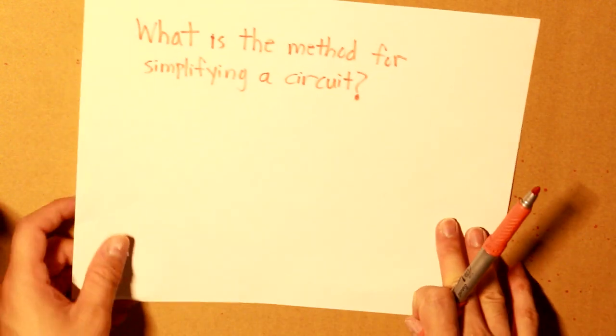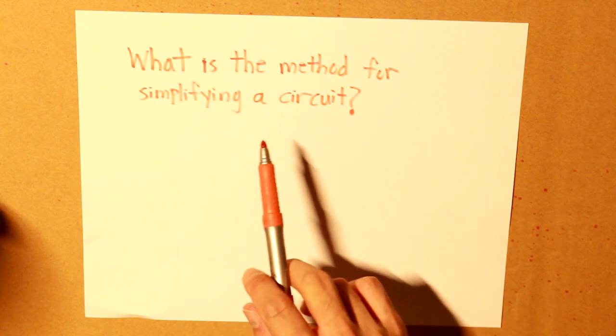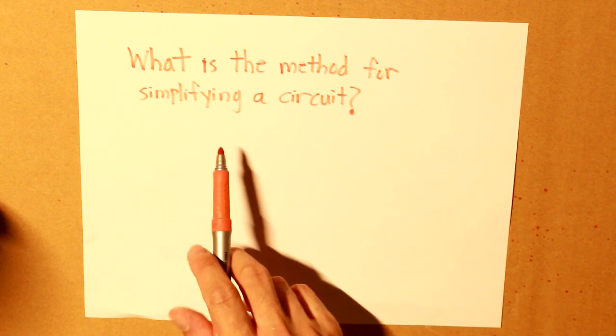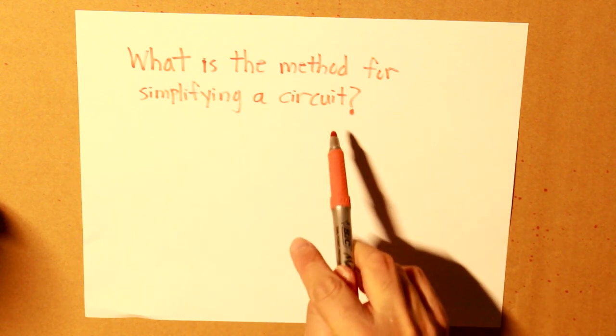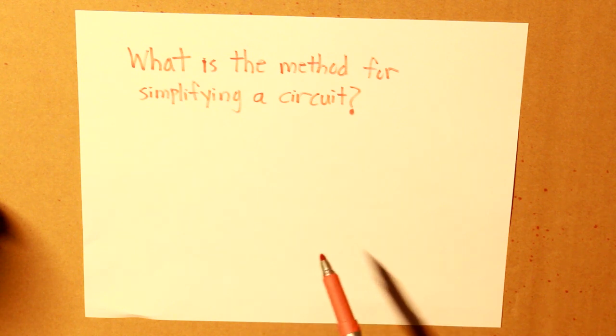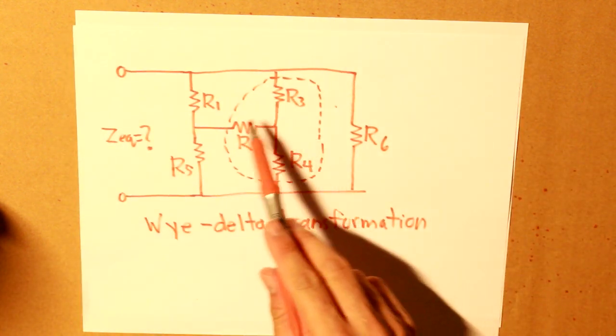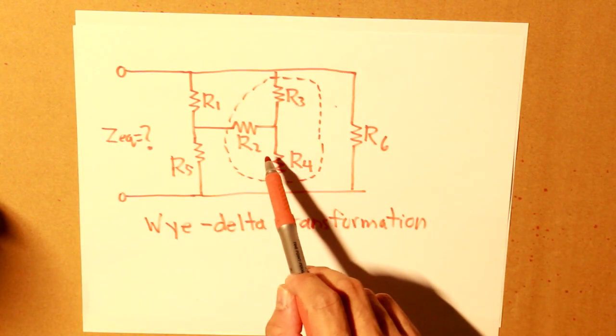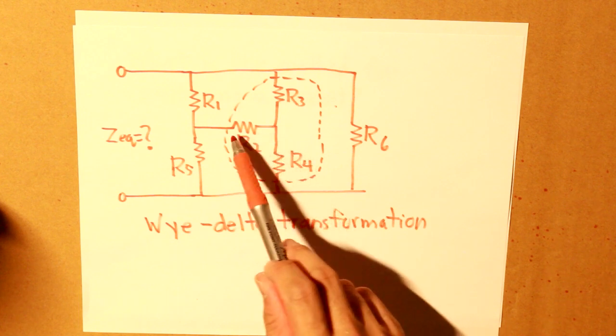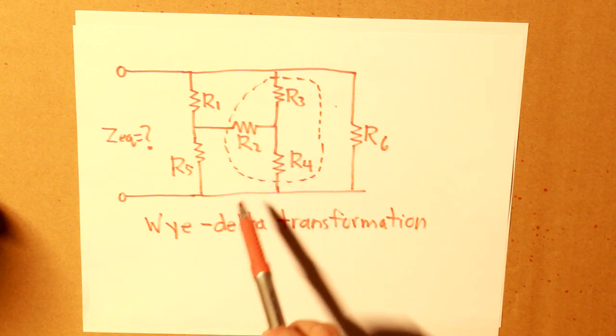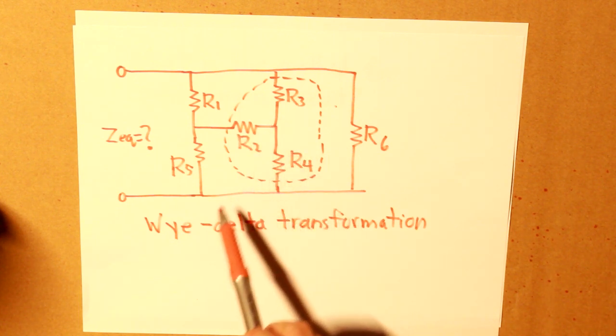So in conclusion, what is the method for simplifying a circuit throughout this video? If we see anything complicated like this, then we should look to find any Y connection so that if we convert it to a Delta connection, we might be able to simplify it.